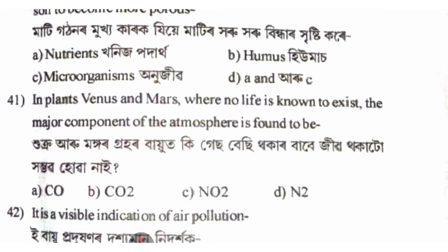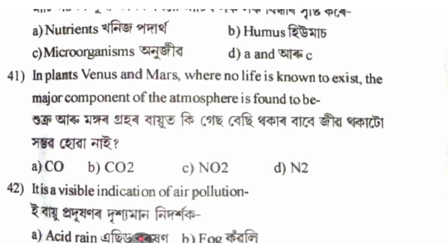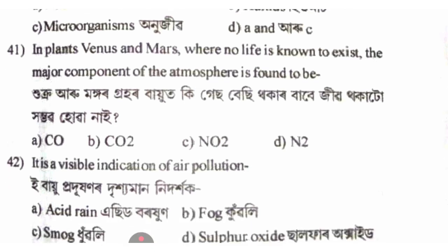On planets like Venus and Mars where no life is known to exist, the major component of the atmosphere is found to be carbon dioxide, option B.